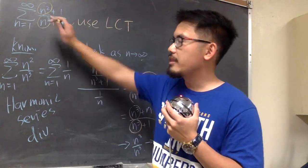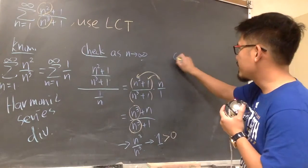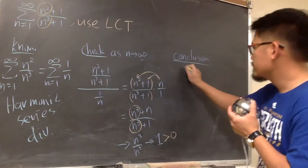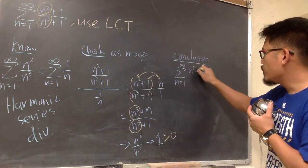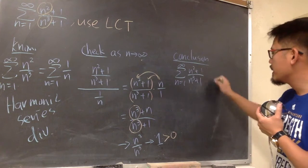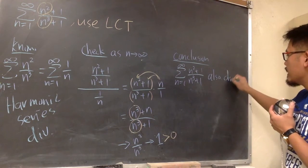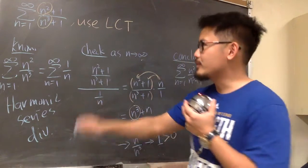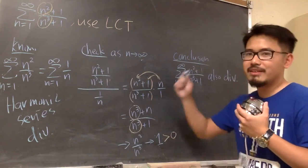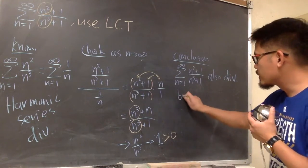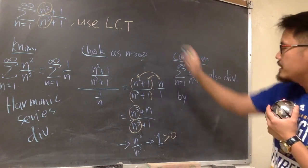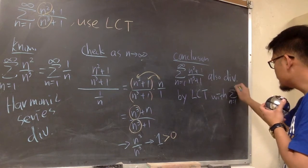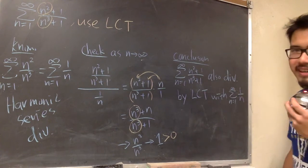When we have this situation, this means both series have the same conclusion. This one diverges, so that also diverges. Conclusion: the original sigma when n goes from 1 to infinity of n squared plus 1 over n to the third power plus 1 also diverges. They always have the same conclusion — this one diverges, this one also diverges because we have a finite nonzero value for the limit. By the limit comparison test with sigma when n goes from 1 to infinity of 1 over n.